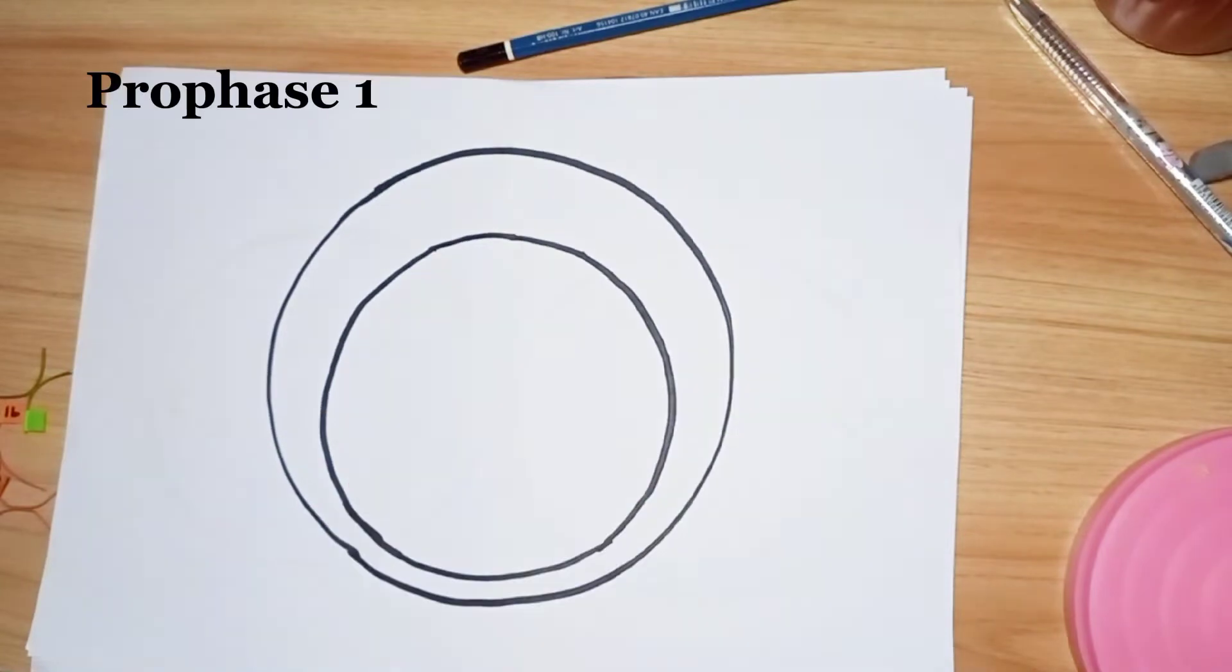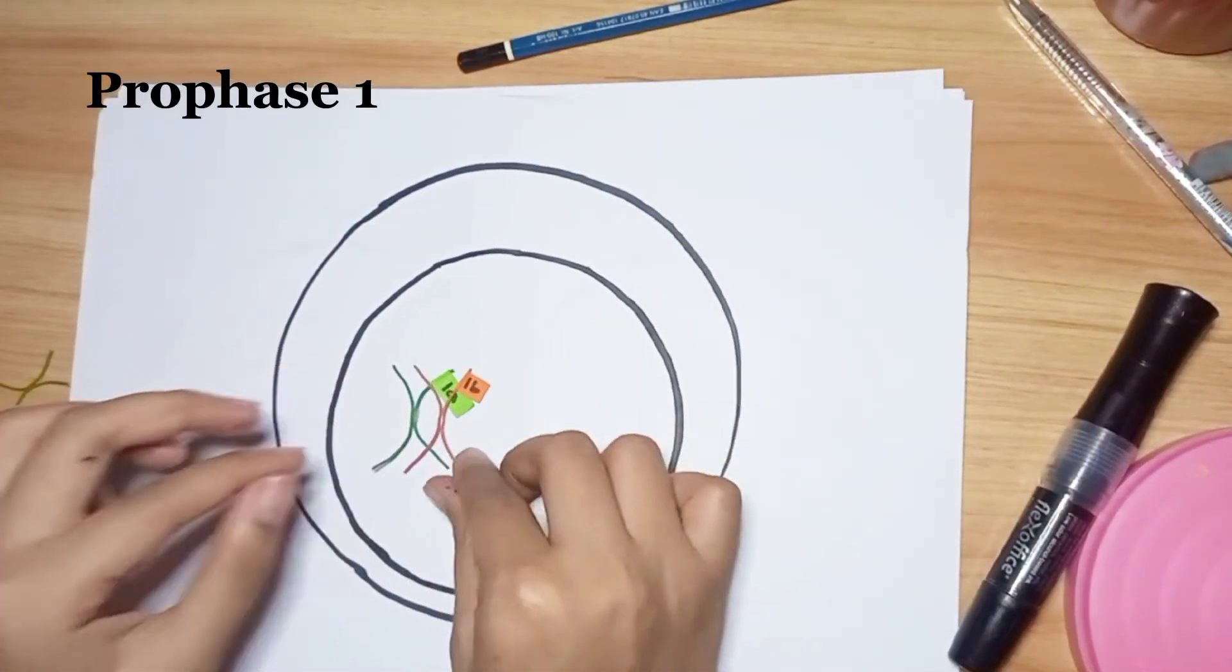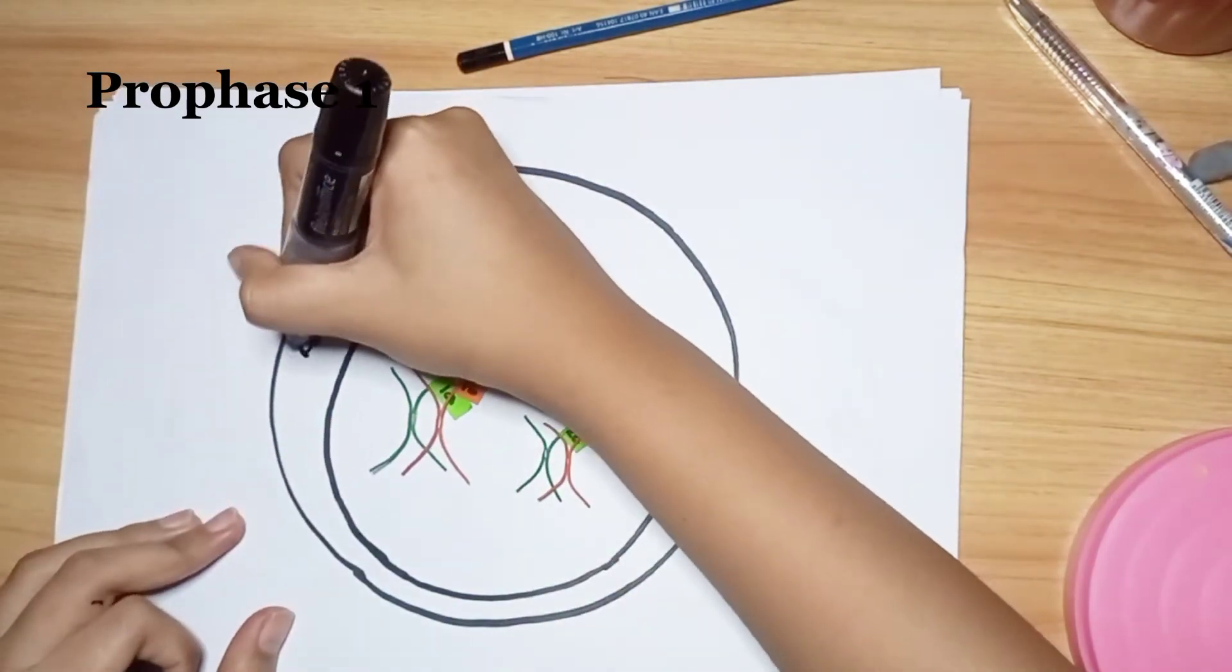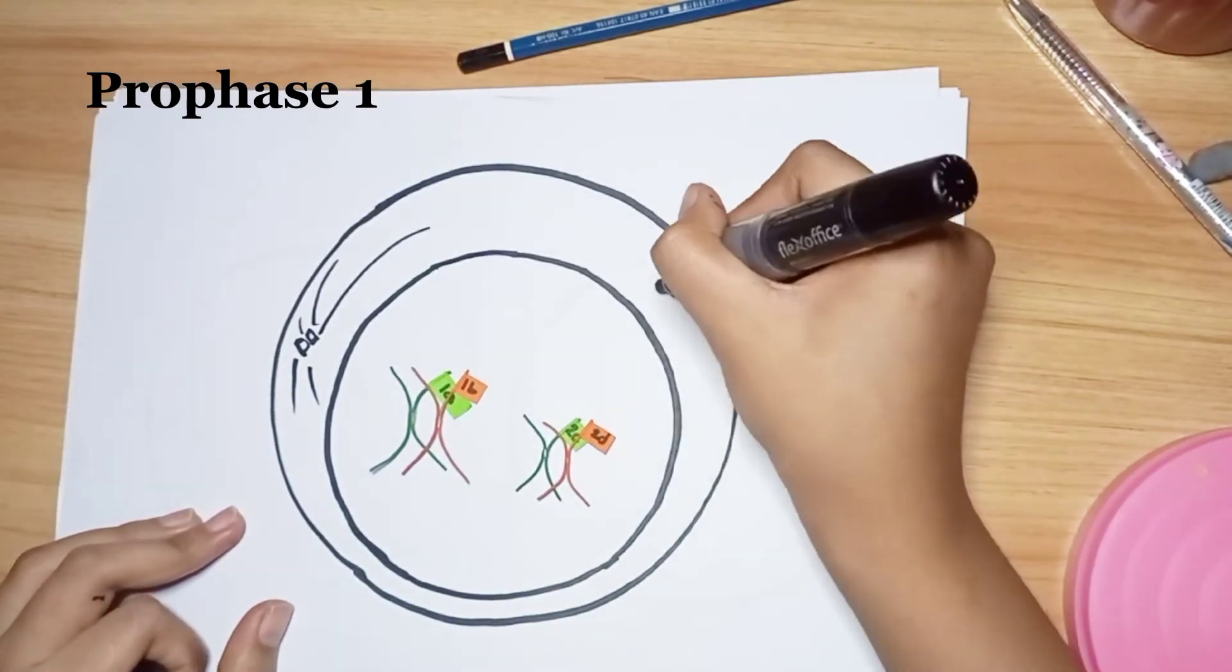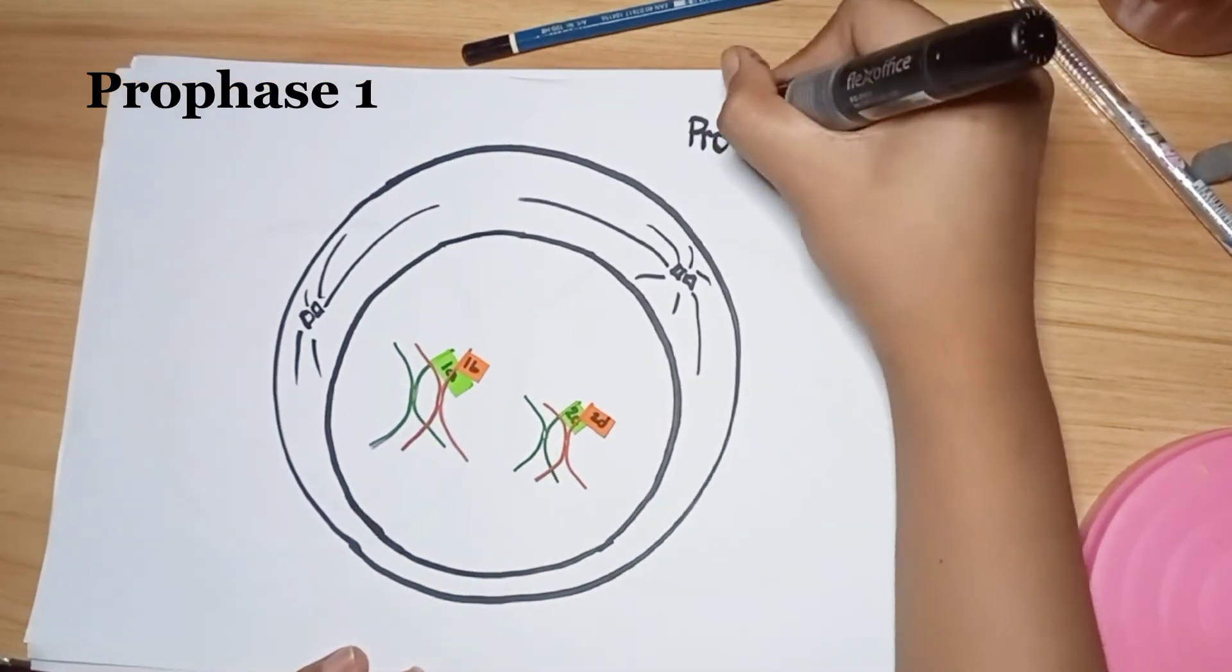Meiosis. During prophase I, the complex of DNA and protein known as chromatin condenses to form chromosomes. The pairs have replicated. Chromosomes are known as sister chromatids, and they remain joined at a central point called the centromere.